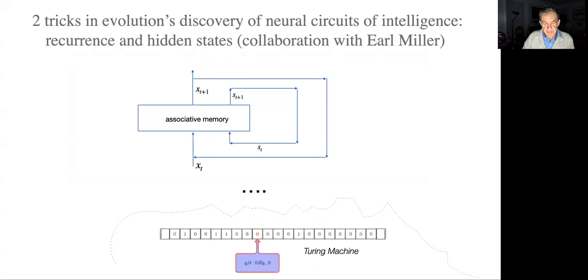My proposal, one of many, is that what evolution may have discovered is recurrence and hidden states. If you add those two things to an associative memory, you have a Turing machine, which is as powerful as we know any system to be today.